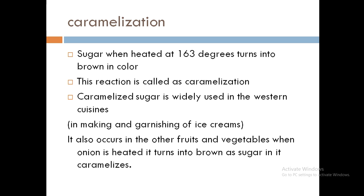Caramelization — sugar, when heated at 163 degrees centigrade, turns brown in color, and the end product of caramelization is melanoidins. Caramelized sugar is widely used in western cuisines, particularly in dishes like pralines, caramelized candies, and caramelized jellies. Indian dishes like chana murki and shakkar para are also purely based on caramelization temperatures and the way we caramelize the sugar.